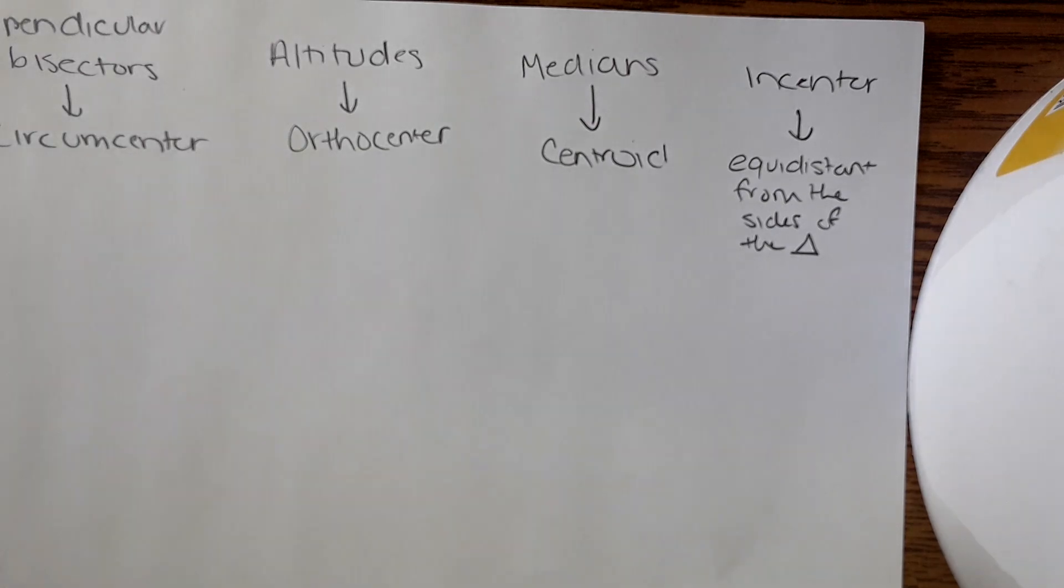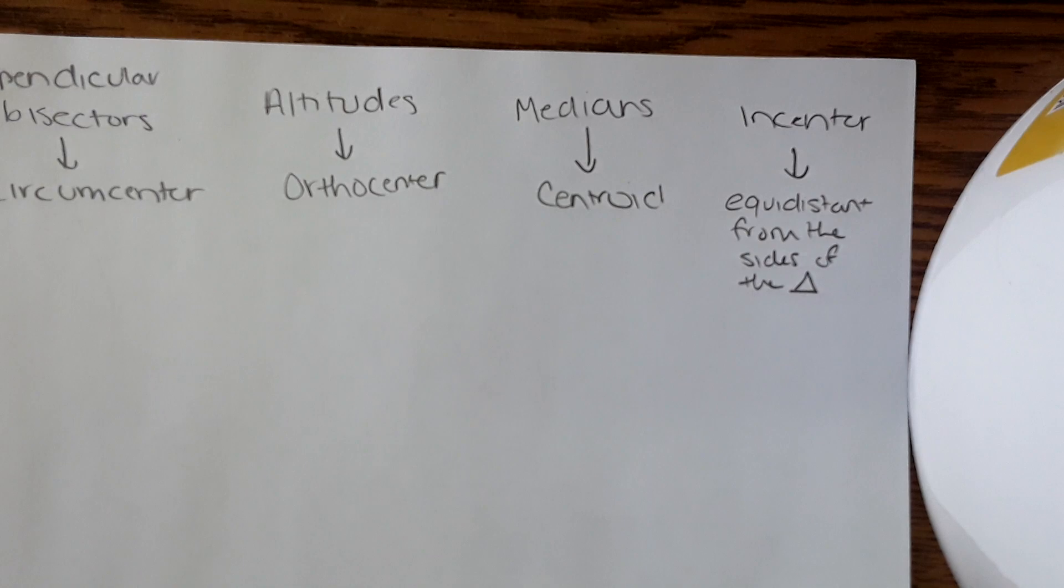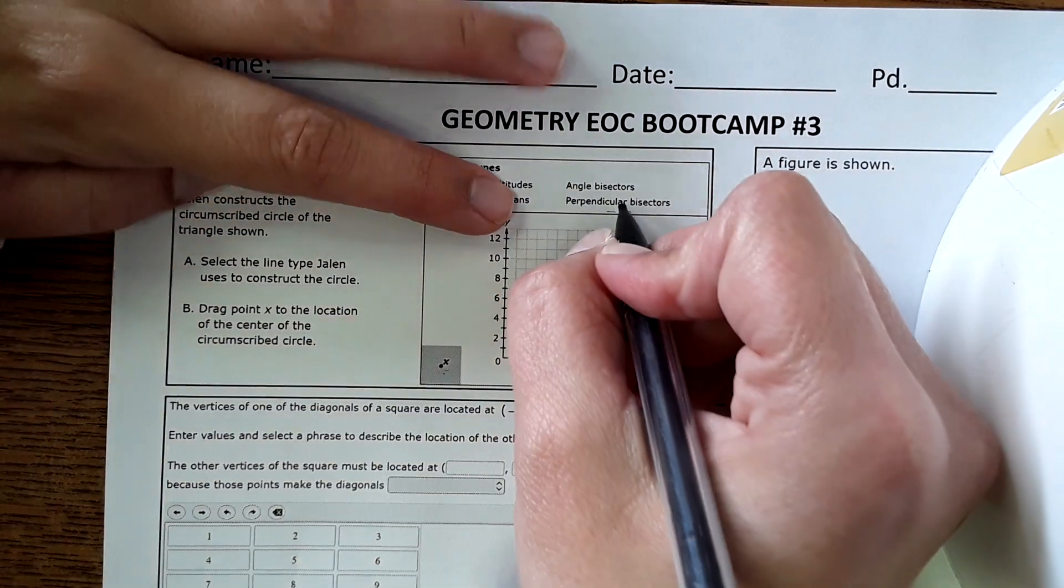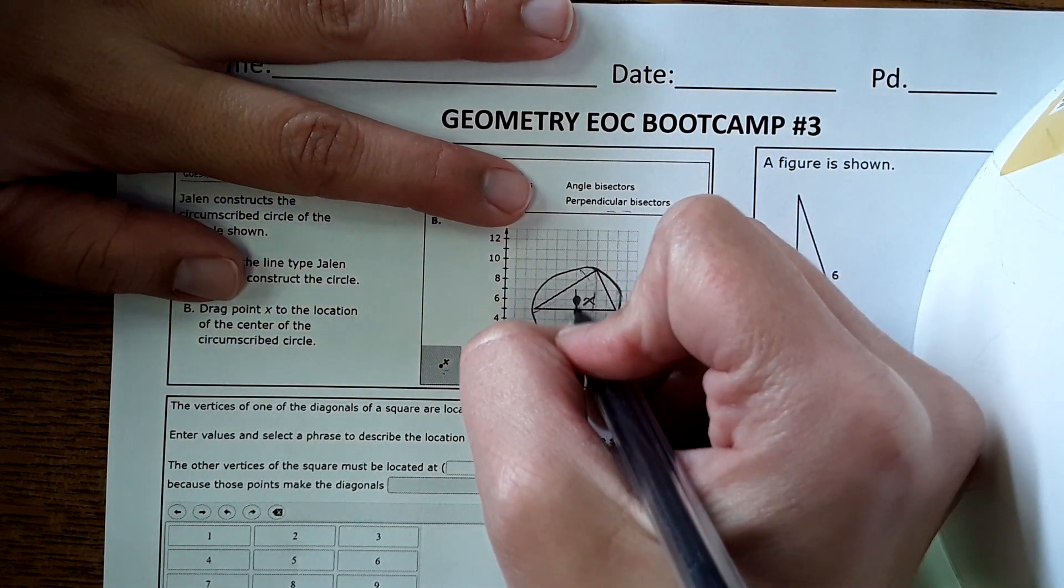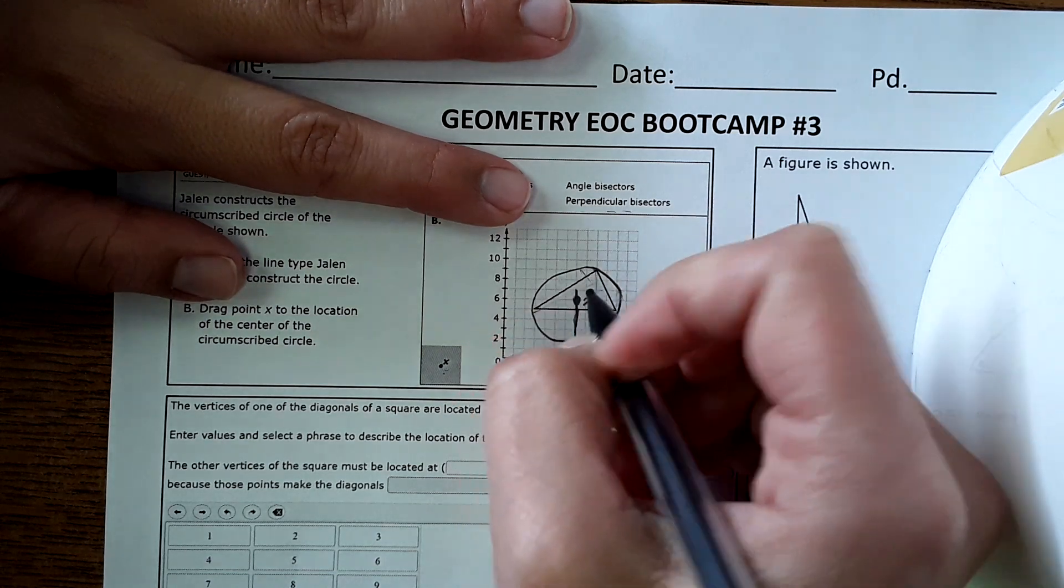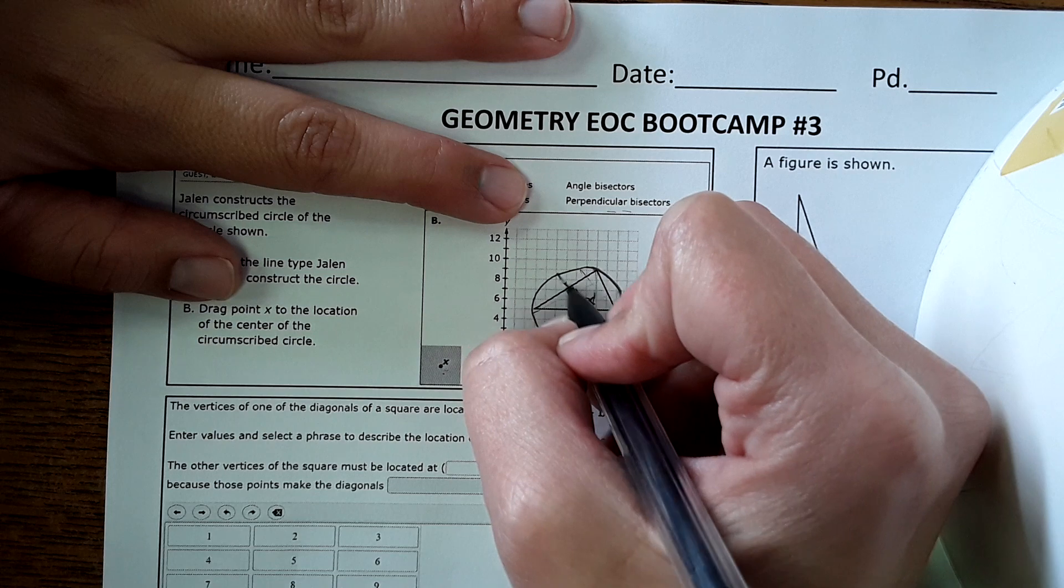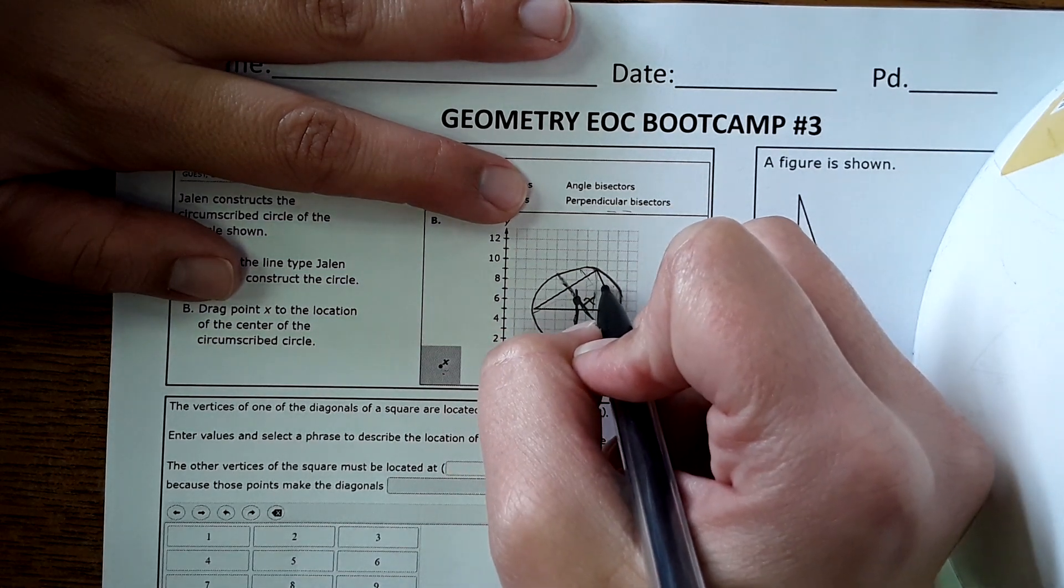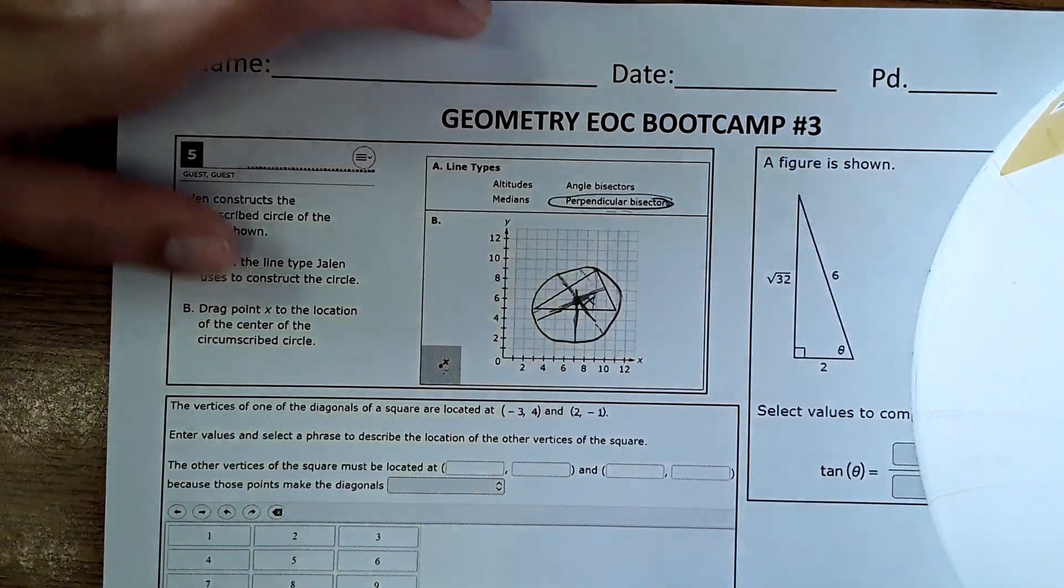So you could memorize those which some of you might want to. But I would recommend just drawing and seeing which one hits that point. So on the other side, if you were to draw these different segments, the ones that would intersect at this point would actually be the perpendicular bisector. So if I drew a perpendicular bisector of this line and then a perpendicular bisector of this line and then a perpendicular bisector of this line, it would intersect at that point. So the answer is perpendicular bisector.